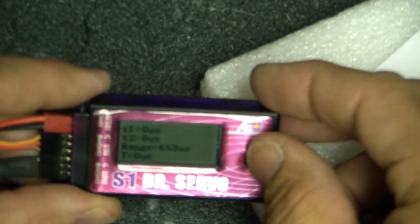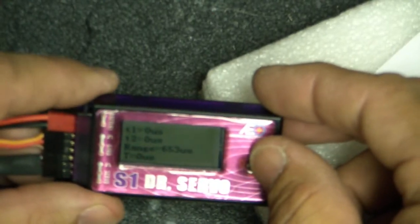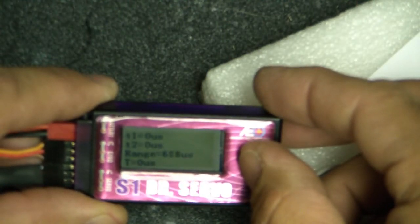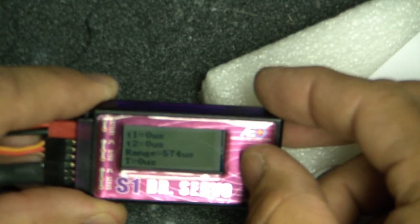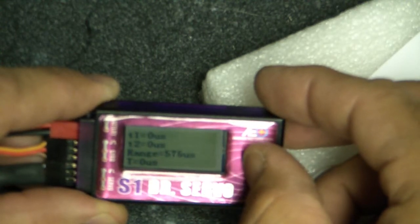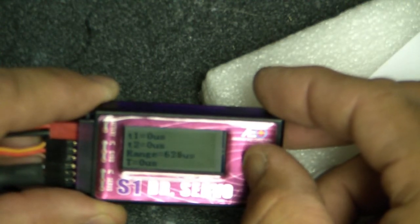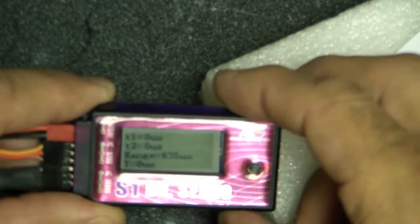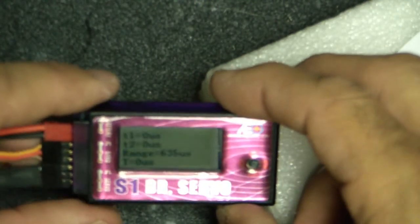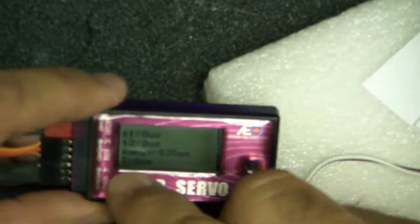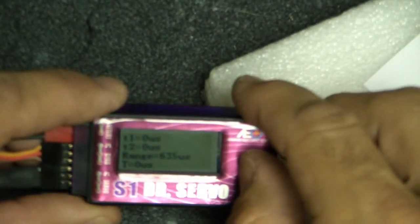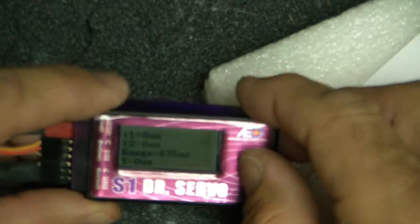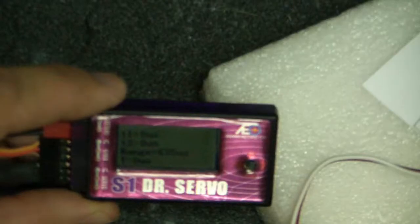Now in the case of this, this screen right here is for testing the servo speed. If I push it to the left, it makes that value there go down. So it says 574. If I push it to the right, it makes that value go up. If I want to do the servo speed test, which I'll do now, this range here is the time increment for 60 degrees. I'm going to hook this up and show you how to do that speed test.